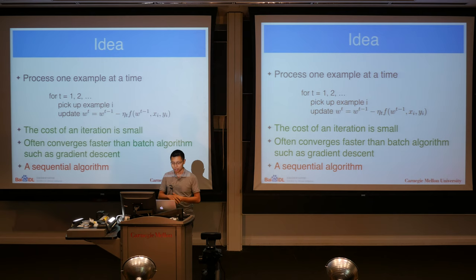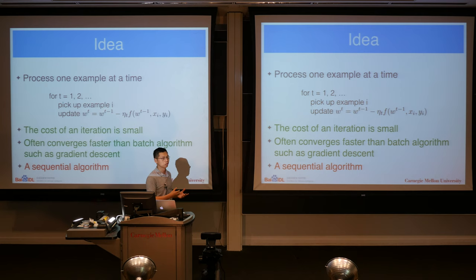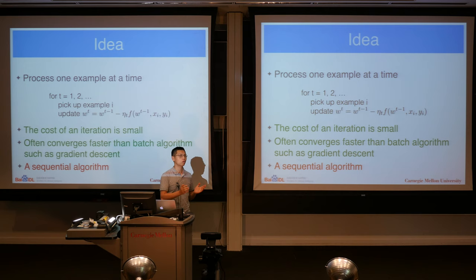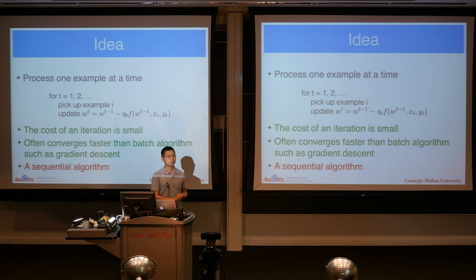As you can see, the cost of each iteration is quite small because each time you only touch one row of the training data, and it often converges very fast compared to batch algorithms. Each iteration of SGD may make a little progress compared to full gradient descent, but given the same time, SGD may run many more iterations, so you may still win. That is a huge advantage of SGD.